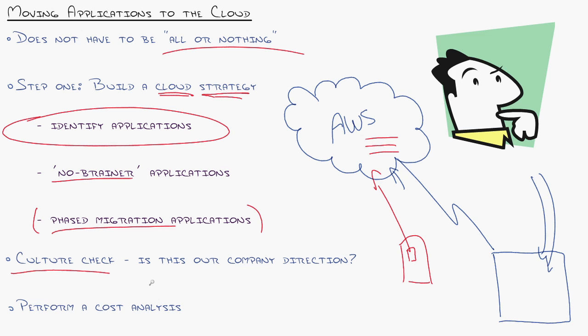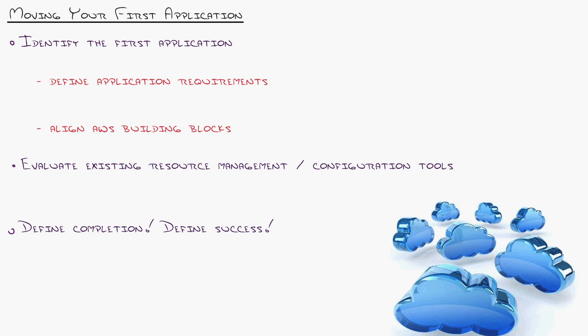Of course, before you do any of this, do a culture check. You can tinker with Amazon Web Services all day long, but if you bring it into the boardroom and say, 'I think we can save money,' and the CEO says, 'that's just not where we're going to go,' then that shuts the whole project down right there. So check the culture and do a cost analysis — we'll come back to the cost analysis in just a second.